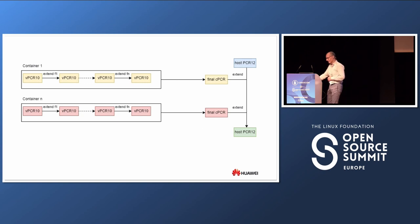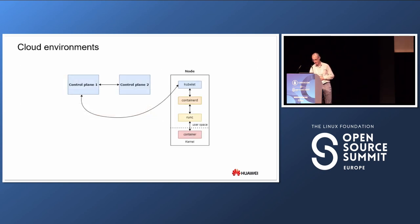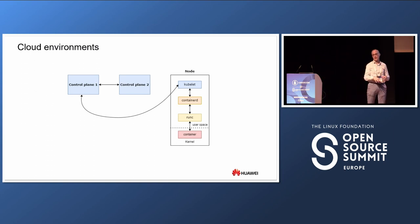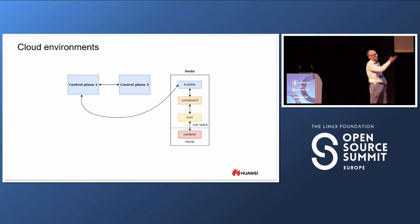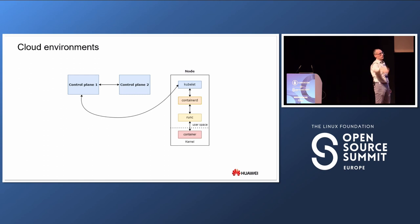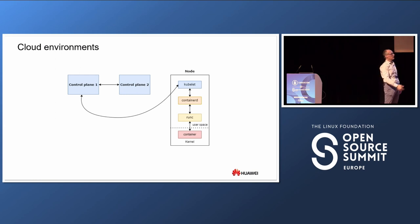All that I explained is just kernel stuff, and while it's nice, it's useless in practice because most people run cloud environments. What we have here is a simple diagram showing one or more control planes that are synced, at least one node with kubelet taking care of that node in Kubernetes, container-d, runc, and then the container running on top of the kernel.